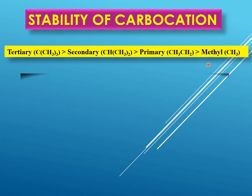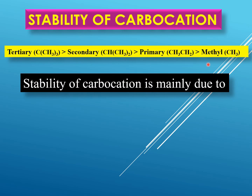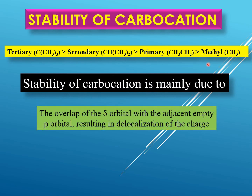The stability of the carbocation is mainly because of the overlap of the sigma orbital with the adjacent empty p orbital. When we talk about carbocations, you have to remember that we have an empty p orbital in the system, and because of the overlap of this adjacent sigma orbital with this empty p orbital, the overall result is the delocalization or dispersion of the charge. When a system has a situation in which the charge on a carbon atom can be dispersed or spread to other atoms, it means the system is more stable.